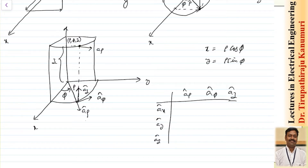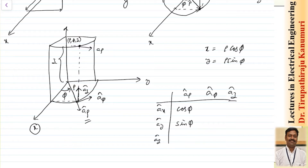For a_rho: projecting onto the x direction gives cos(phi), and projecting onto the y direction gives sin(phi). Remember, if you can visualize your coordinate system properly in an exam, you can derive this table directly — no need to memorize. For the z component of a_rho: since rho and z are 90° perpendicular in the cylindrical system, the dot product gives zero.